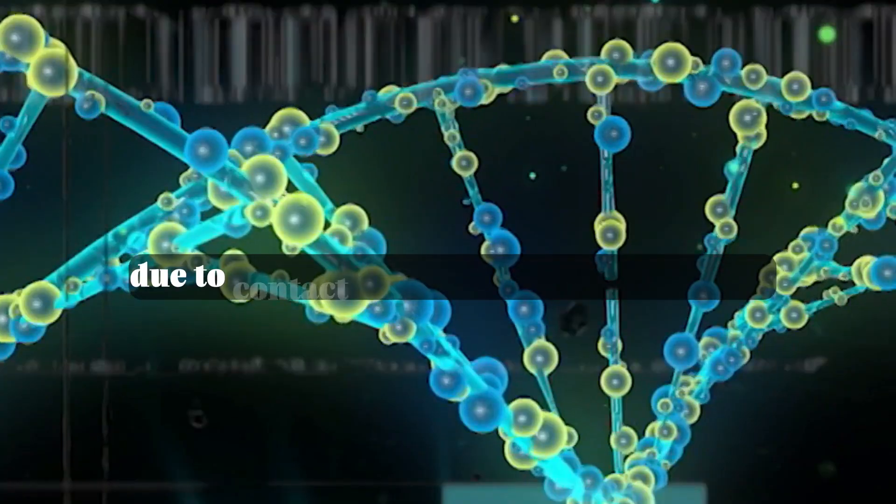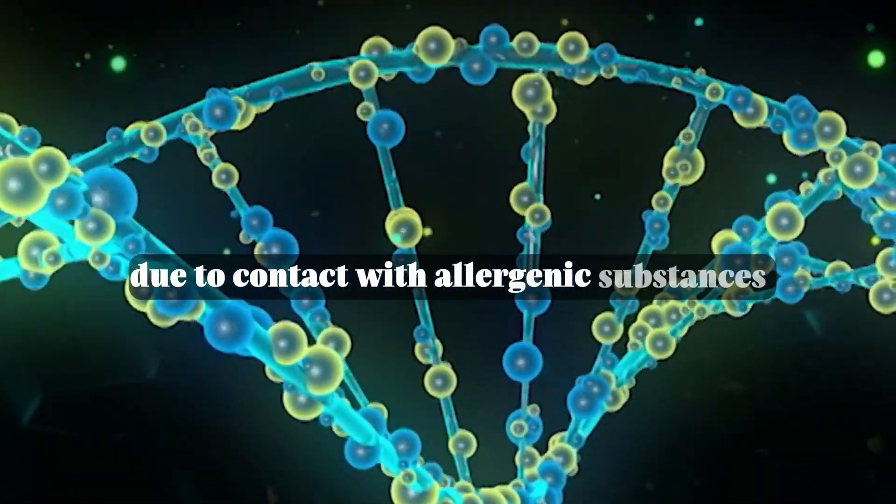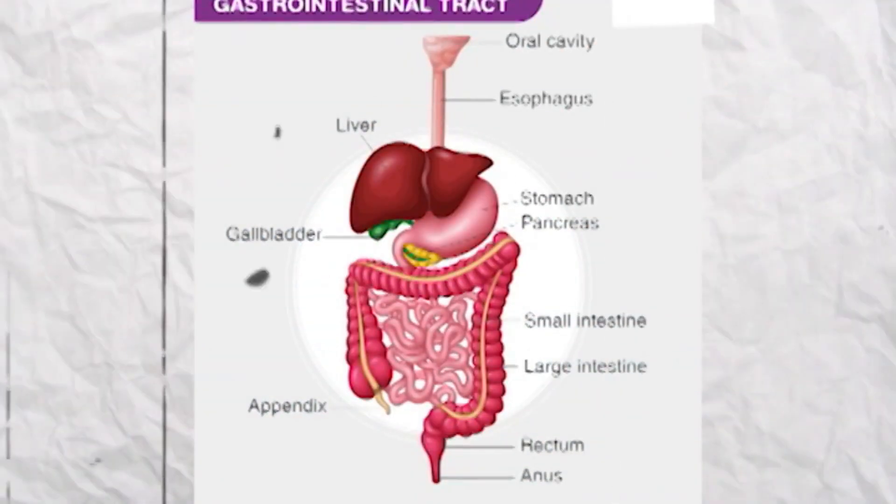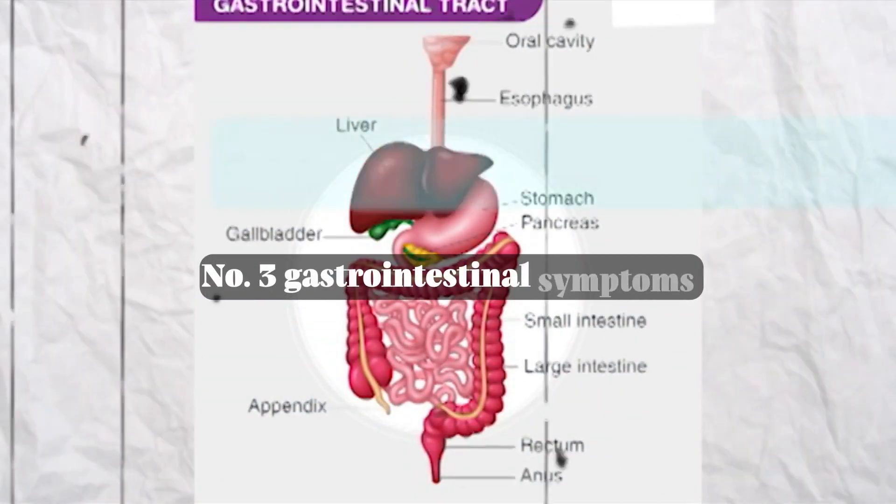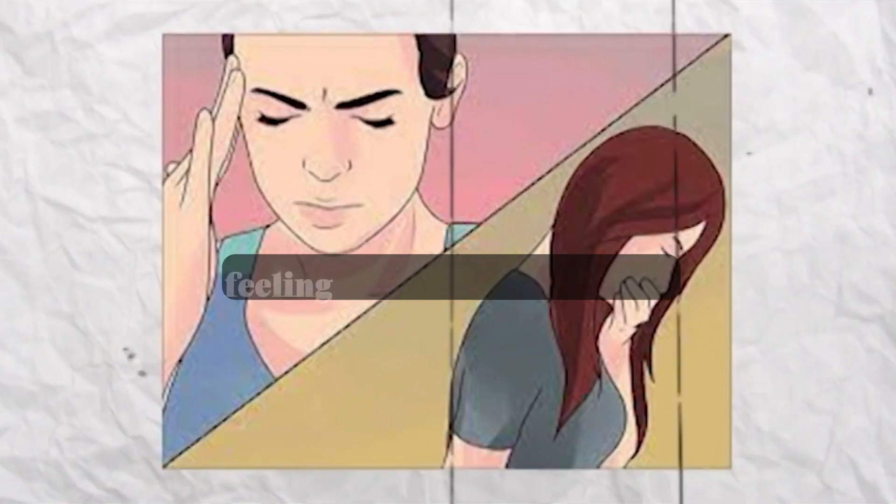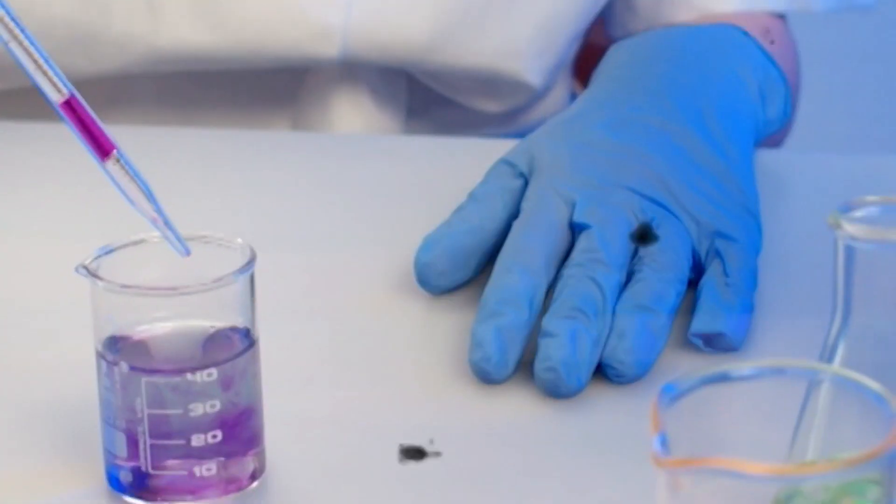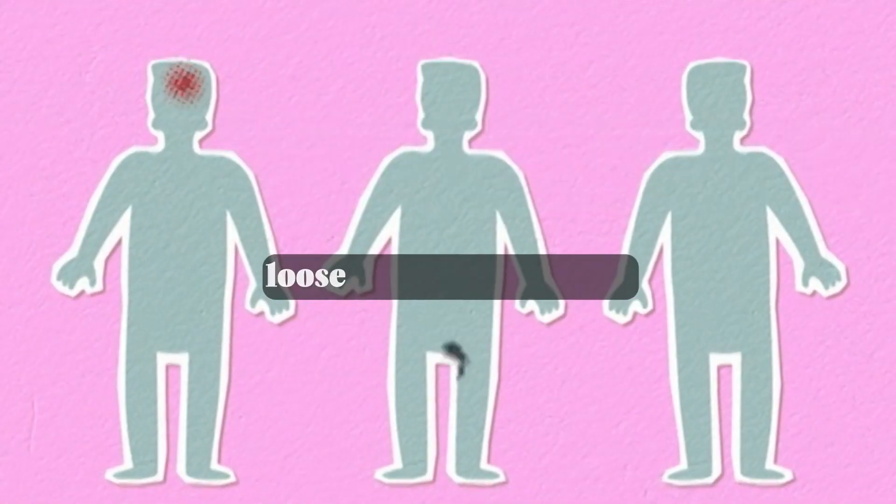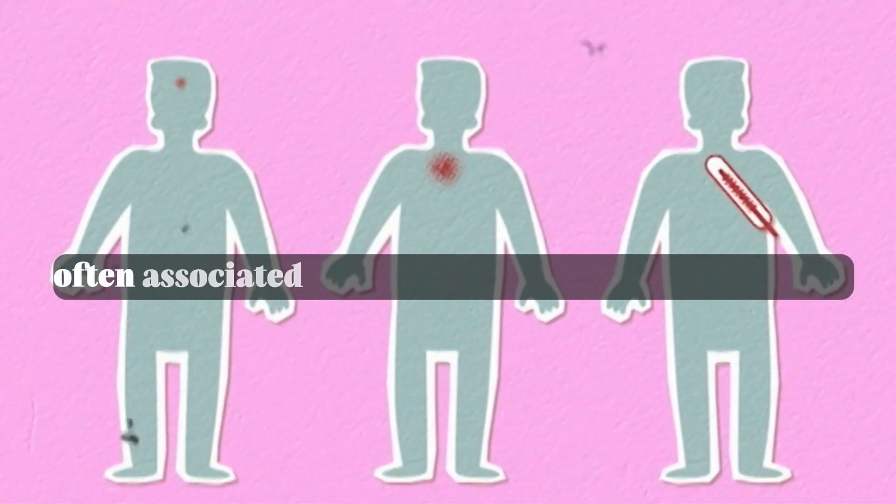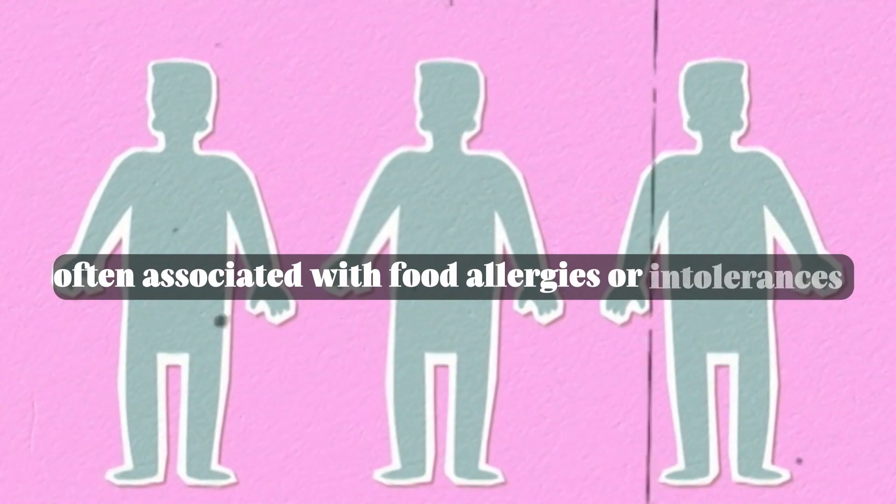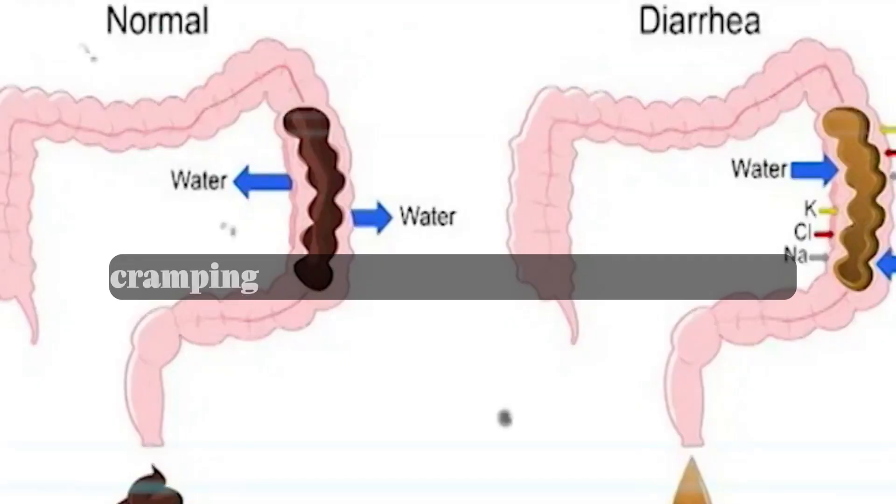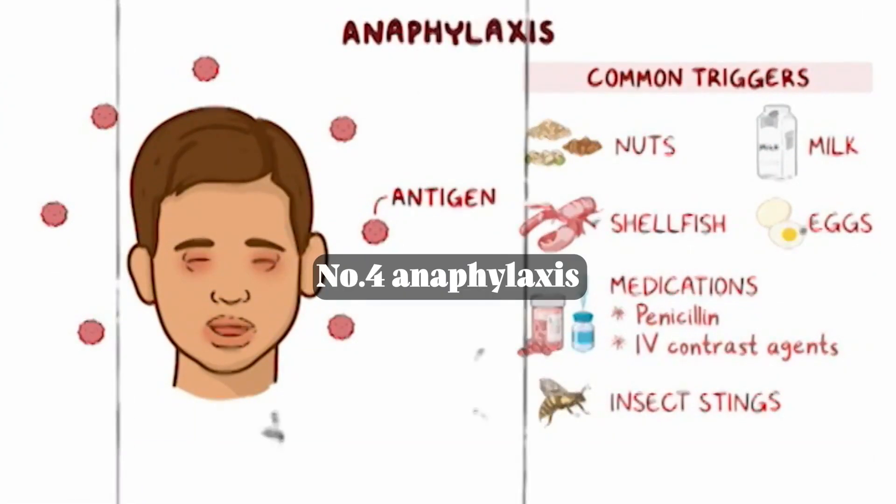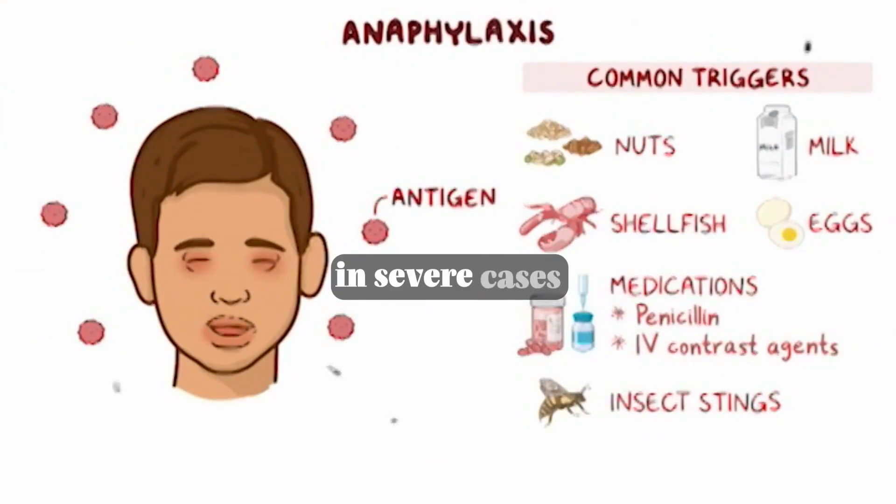Number three: gastrointestinal symptoms. Nausea and vomiting: feeling nauseous or vomiting, especially after consuming allergenic foods. Diarrhea: frequent loose bowel movements, often associated with food allergies or intolerances. Abdominal pain: cramping or discomfort in the stomach area.